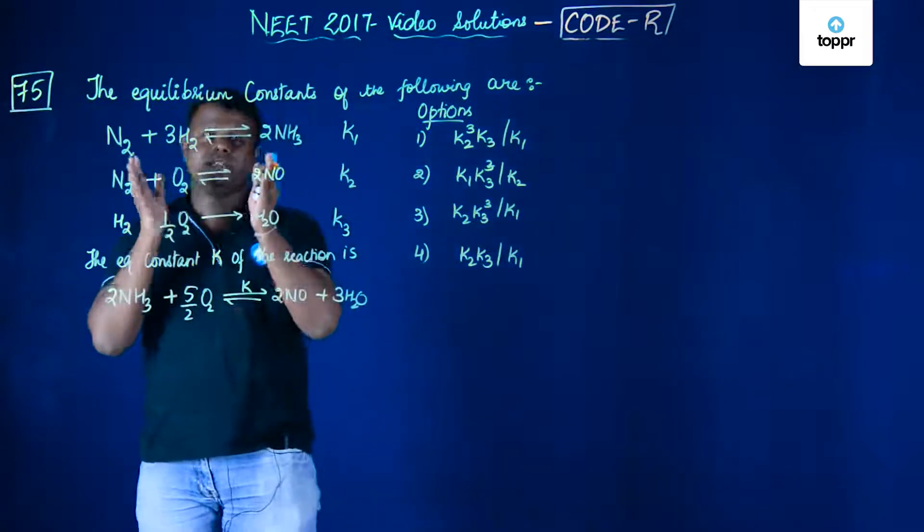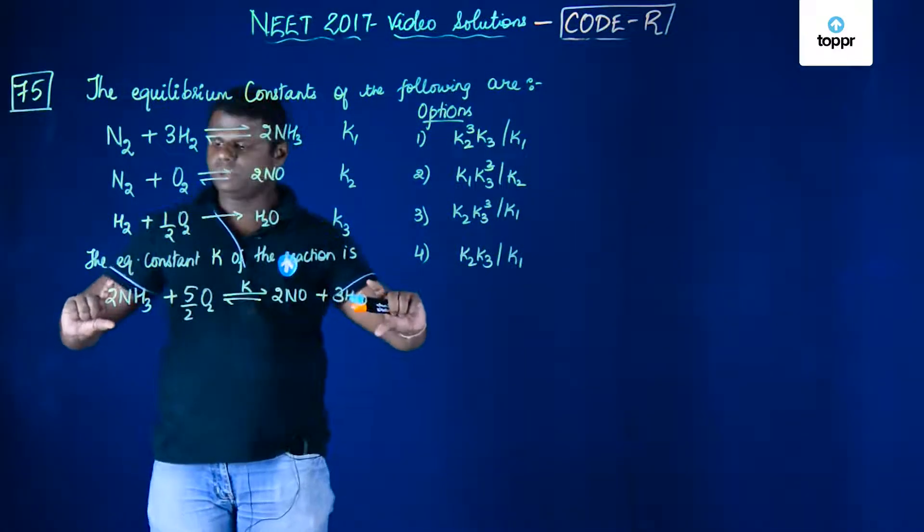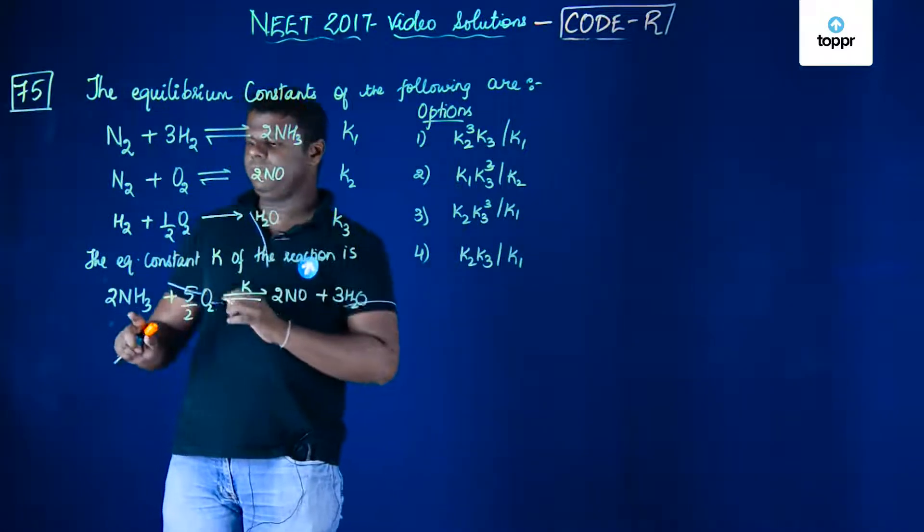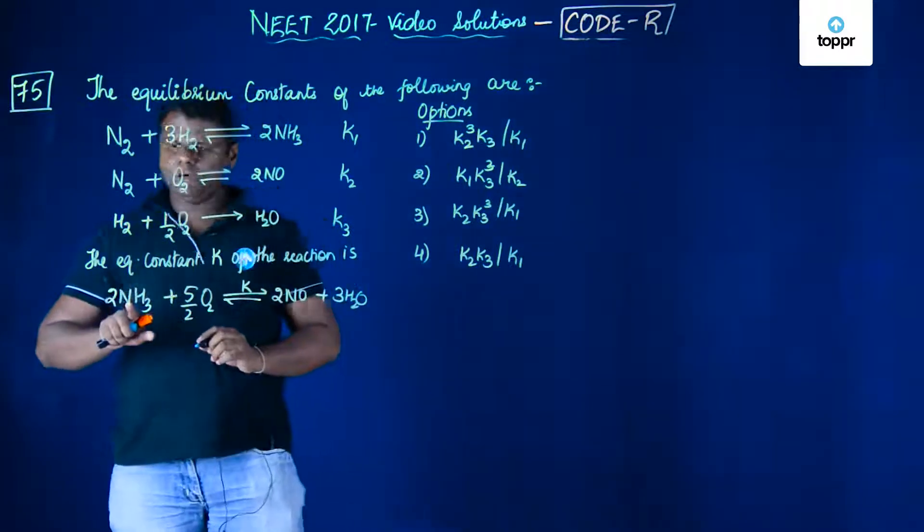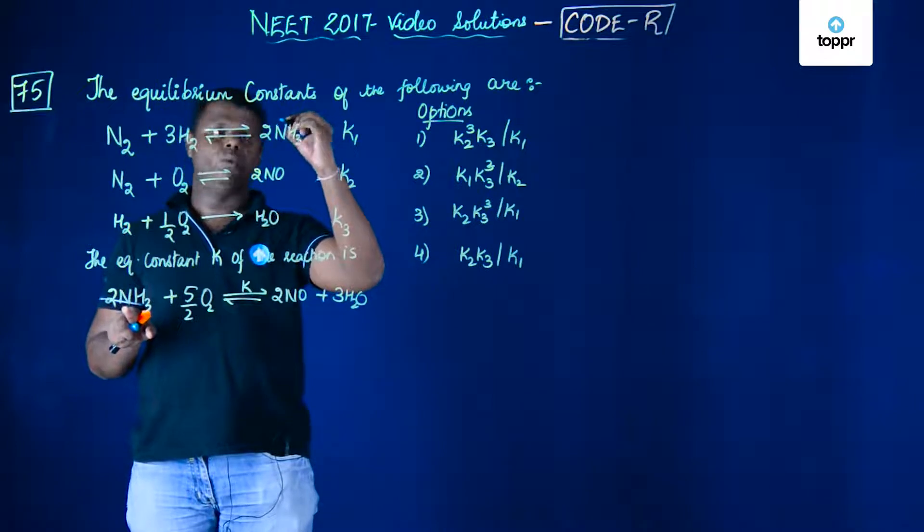Let's analyze what exactly is going to happen. Let's look at the final equation and see what terms are appearing. You have two moles of NH3 appearing only in equation number 1.